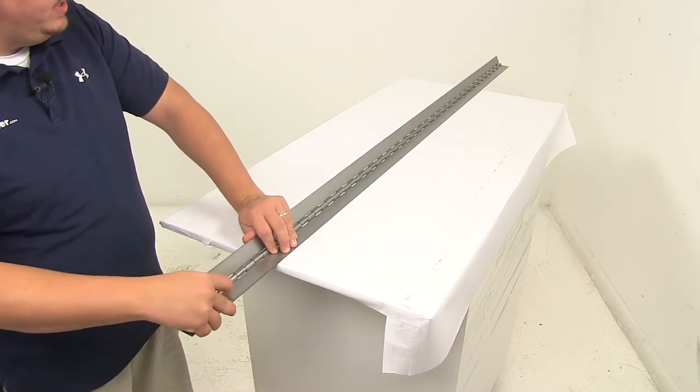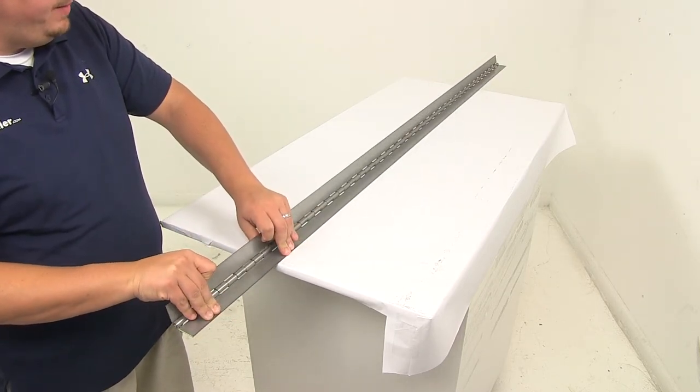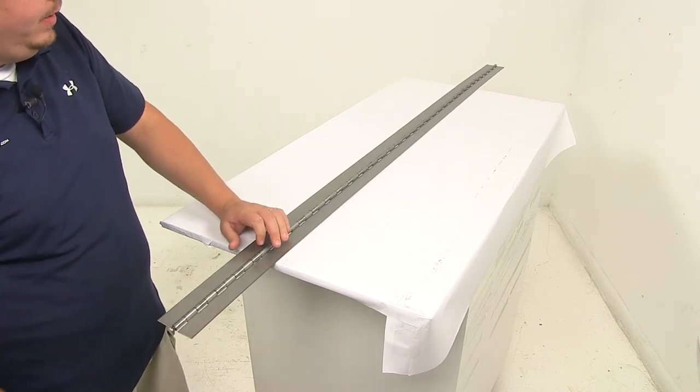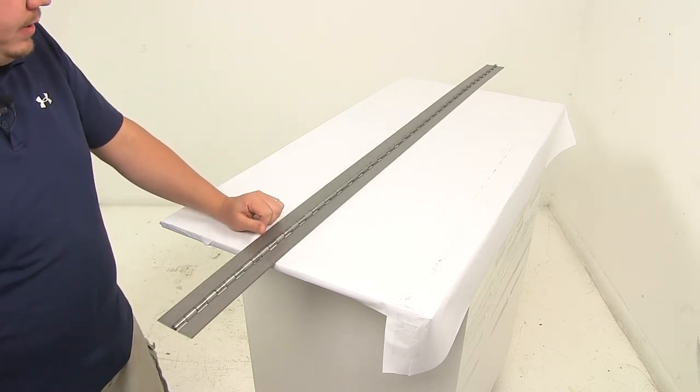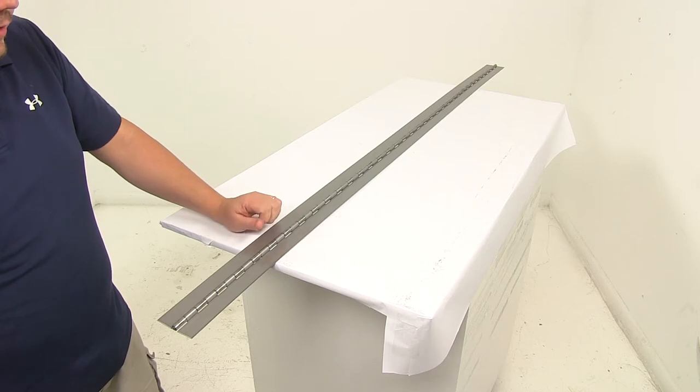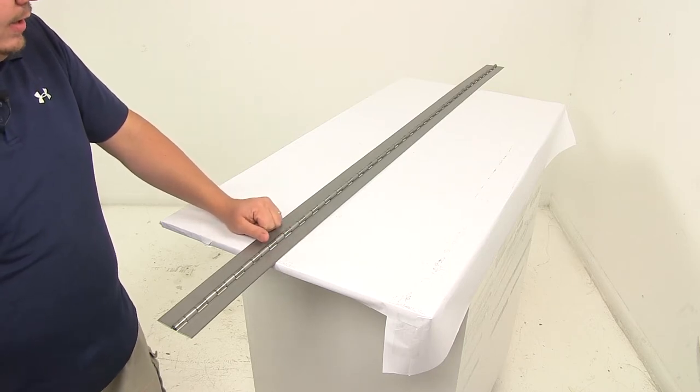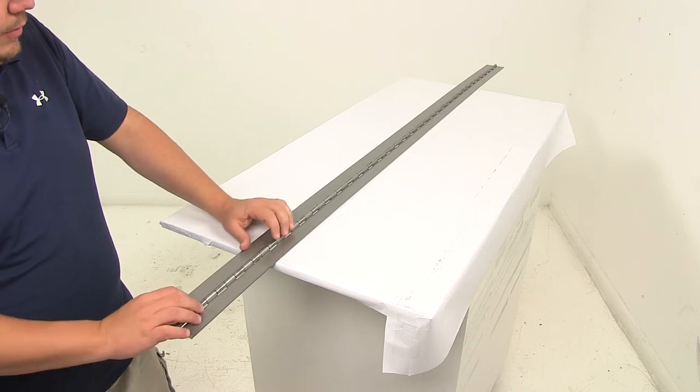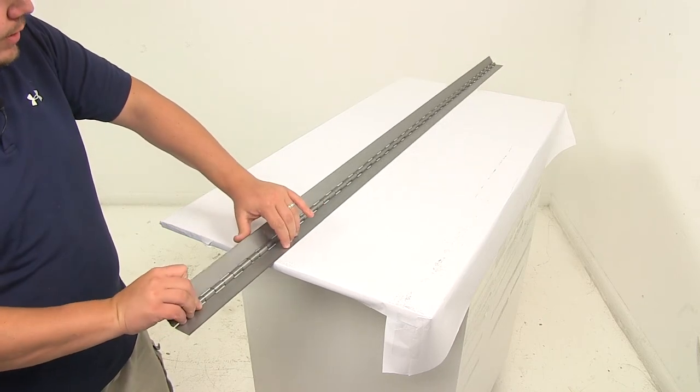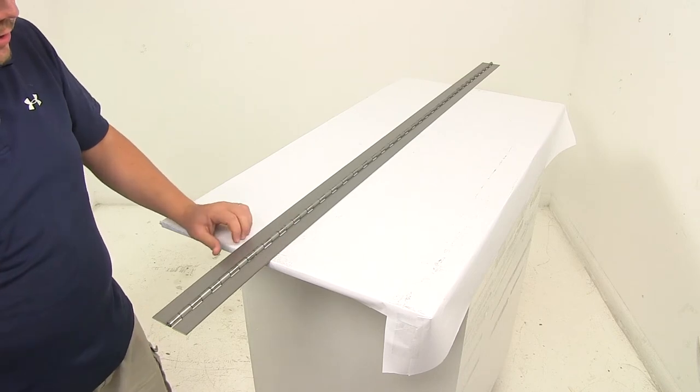Now piano hinges can be found on a variety of different applications. You'll find them sometimes in toolboxes, you'll find them for different types of flaps, and you'll also find them on trailers, usually for the ramp door of a trailer. But again, they can be used for a variety of different applications.